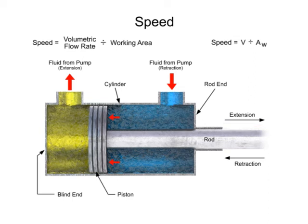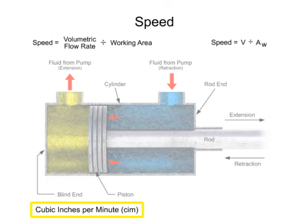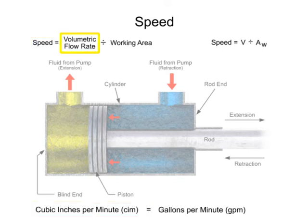The rate at which a particular volume of fluid moves through a system is called the volumetric flow rate. The volumetric flow rate is commonly expressed in either cubic inches per minute or gallons per minute. In order to calculate speed in inches per minute, we need the volumetric flow rate expressed as cubic inches per minute. To convert from gallons per minute to cubic inches per minute, multiply the volumetric flow rate in gallons per minute by 231.